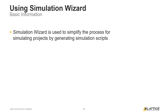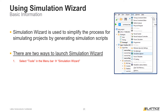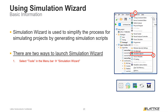There are two ways to launch the Simulation Wizard. The first way is to select the Tools drop-down from Radiant's menu bar, then select the option called Simulation Wizard. The second way is to select its icon from the Radiant toolbar, as seen in the figure at the bottom of the screen. There are no differences between these two methods, as both will open the window for setting up a Simulation Wizard project.